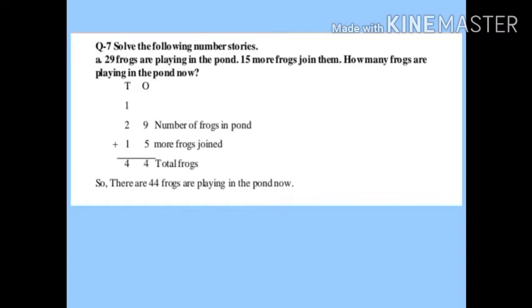First story: 29 frogs are playing in the pond, 15 more frogs join them — how many frogs are playing in the pond now? So 29 frogs were there and 15 joined, we need to find the total. That means we have to do addition here.